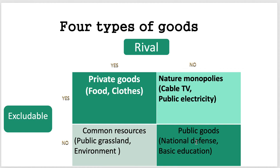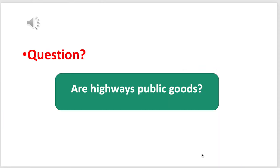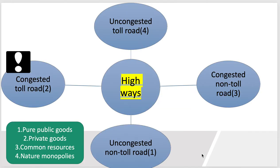If it's non-rival and non-excludable, it's a public good — national defense, basic education, the highway systems. So that's a good question: are highways public goods? If we talk about uncongested non-toll roads, it's a pure public good. If it's a congested toll road, it's kind of a private good. A congested non-toll road is a common resource. And an uncongested toll road is a natural monopoly of sorts.